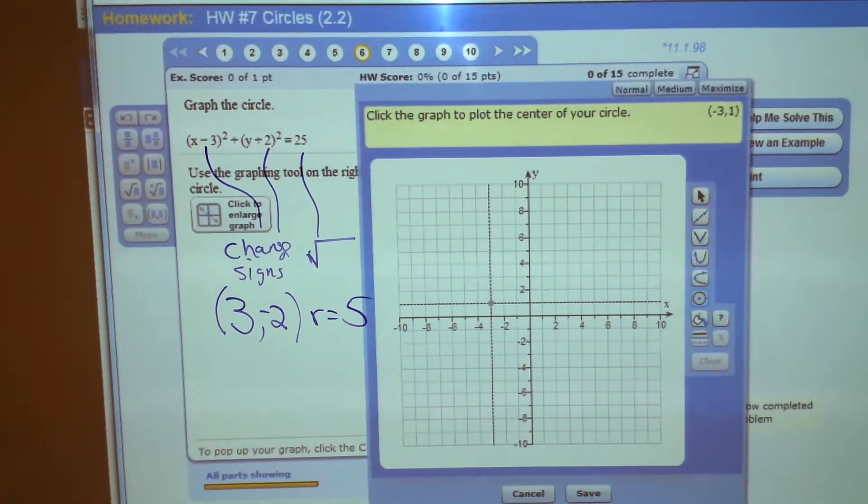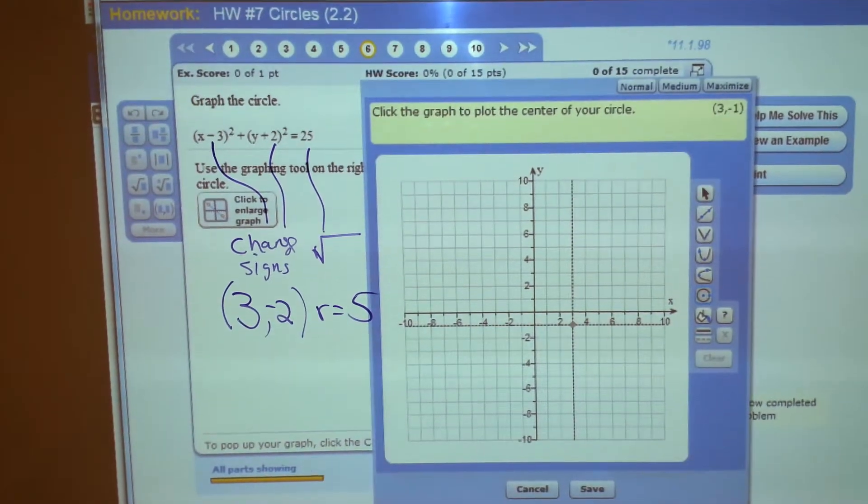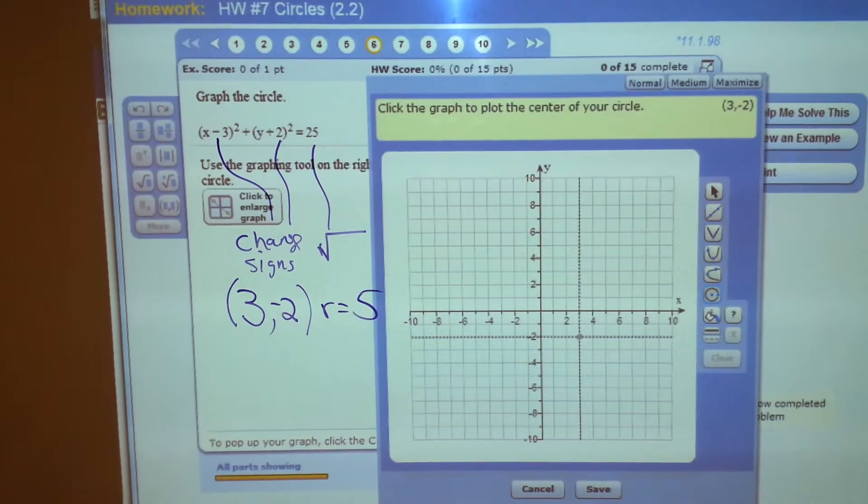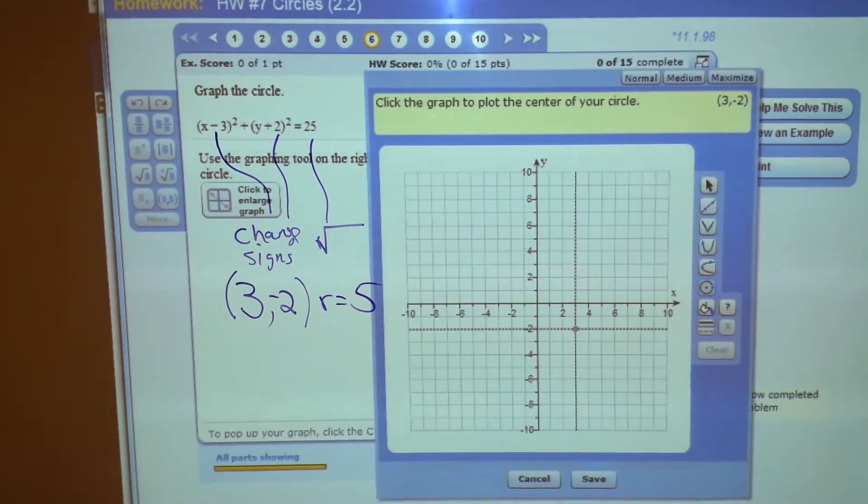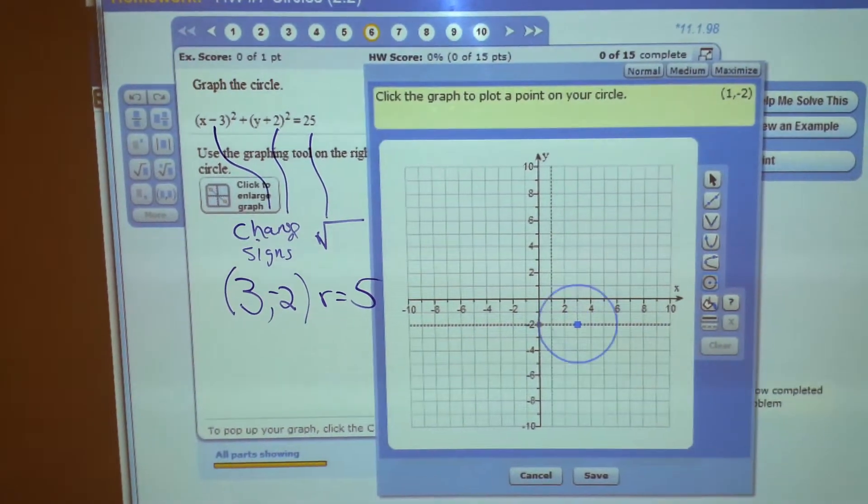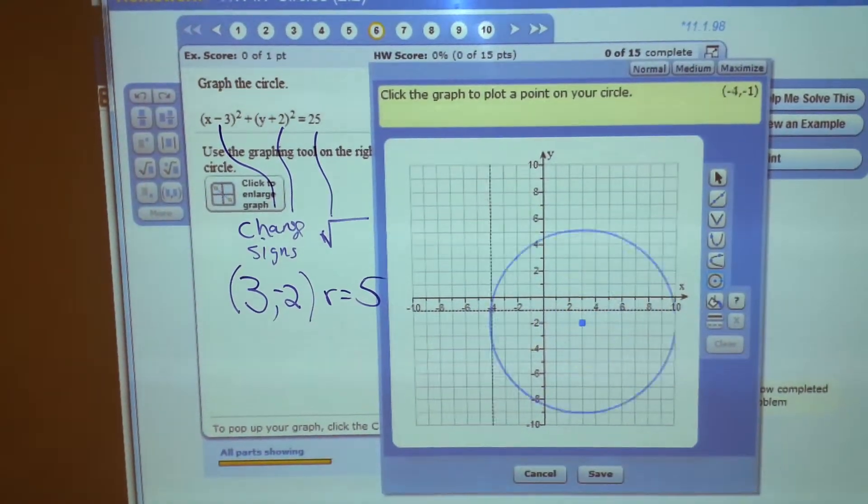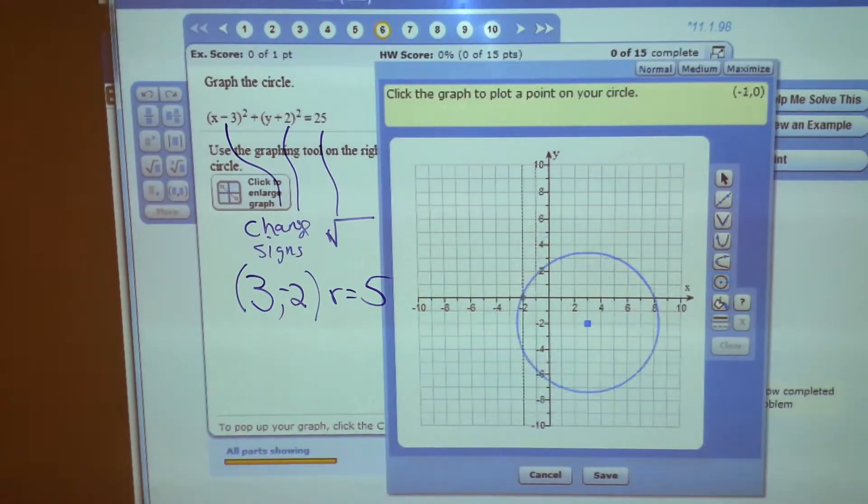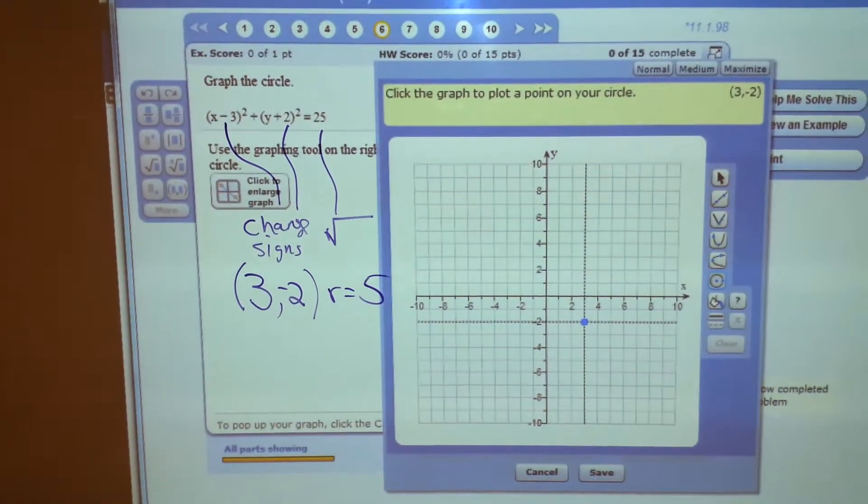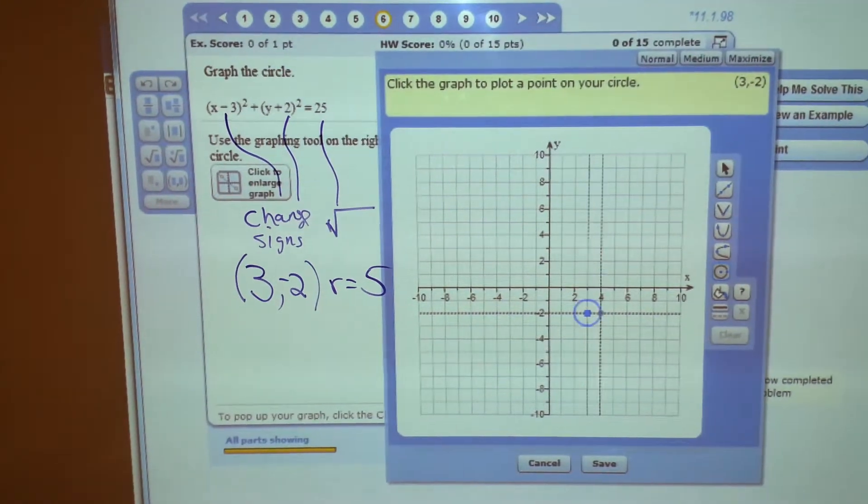I'm going to move around. What was that center? 3, negative 2. In the yellow box, it says the center is 3, negative 2. That's the point I have there. So, I click, and now notice all the circles that are centered there. To find your circle, you're going to start at the center and move 5 units up.